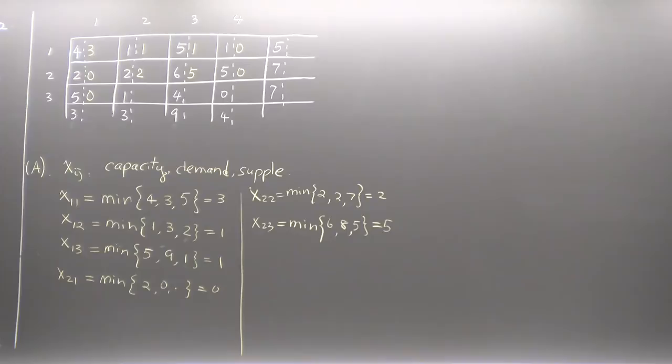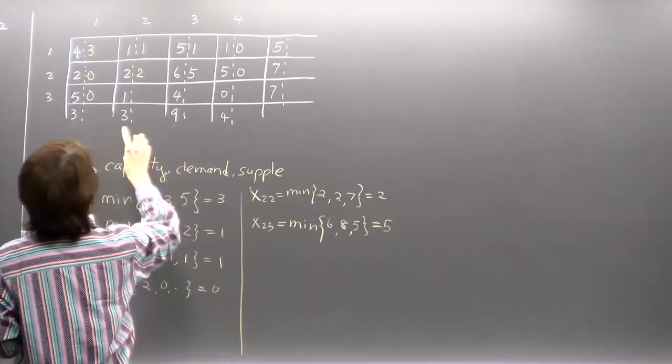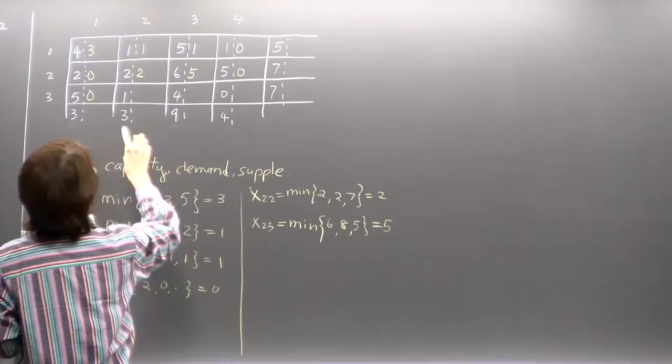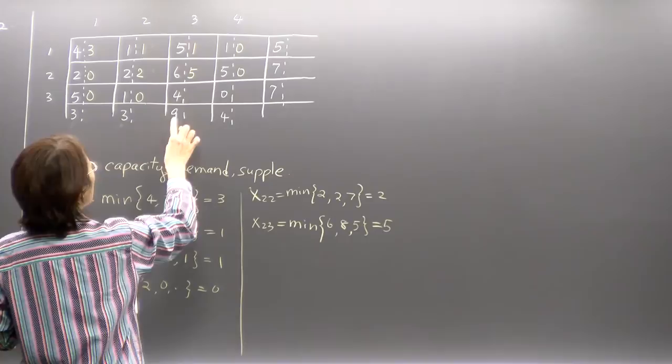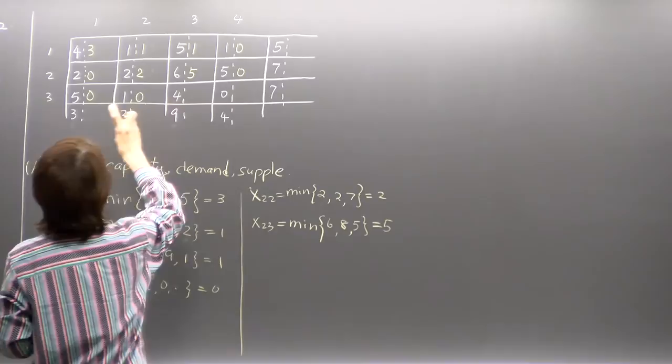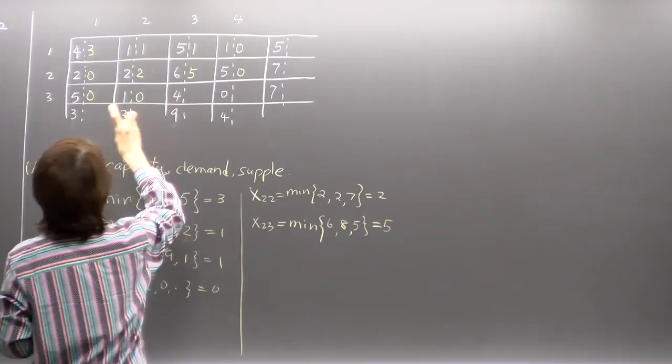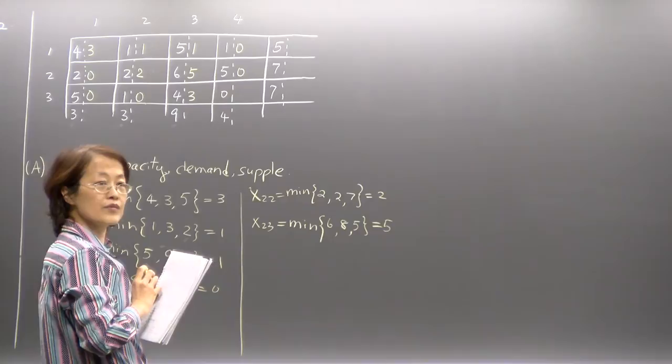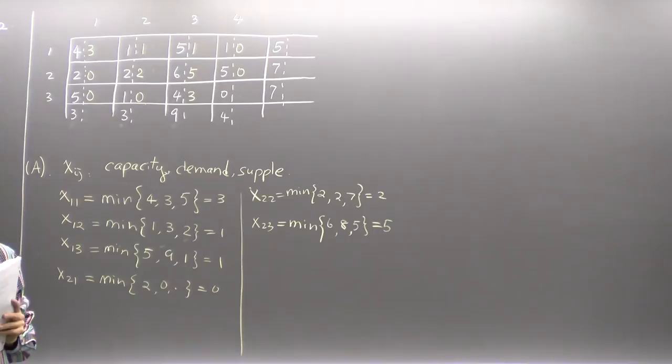Then checking: 1 plus 2 is already 3, demand is met — nothing to ship here. For x_{3,4}: capacity is 4, remaining demand is 9 minus 1 minus 5 equals 3, supply is 7 minus 0 equals 7 — so the minimum is 3. The last cell with capacity zero means there is no connection between those two places — nothing to be shipped.